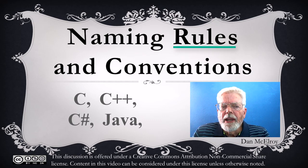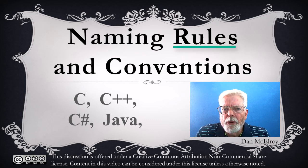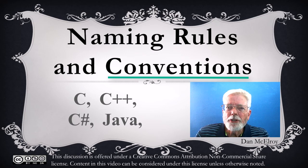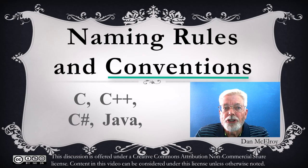A rule is a requirement of the programming language that will cause a syntax error if violated. A convention is not a violation of programming language, but is like an agreement among programmers on how things should be done.